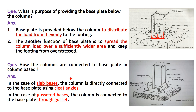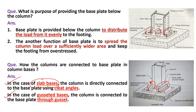Now, how are the base plates or column bases connected to the concrete foundation? In the case of slab base, the column is connected to the base plate with the help of cleat angles and bolted connections. In the gusseted base, a gusset plate is used to connect the column with the base plate.